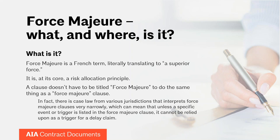Force majeure is a French term that literally translates to 'a superior force' or 'a greater force.' At its core, it's a risk allocation principle. The idea behind a force majeure clause is to embody the concept that construction contracts anticipate and have mechanisms in place to apportion risk, and as a result, adjust project schedules, contract time, contract sum, etc., if a party is unable to complete their contractual duties due to a superior force. Importantly, a clause does not have to be titled 'force majeure' or even use those words to function as one.